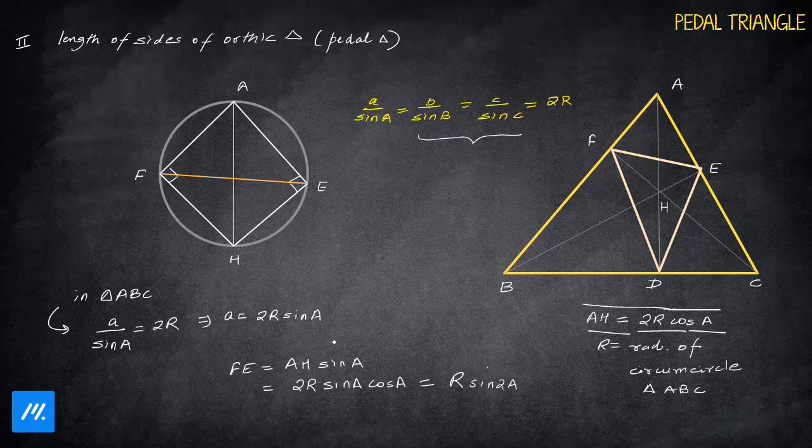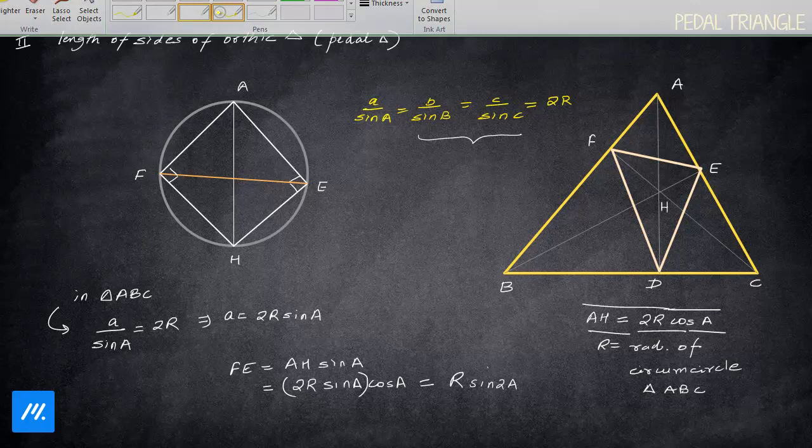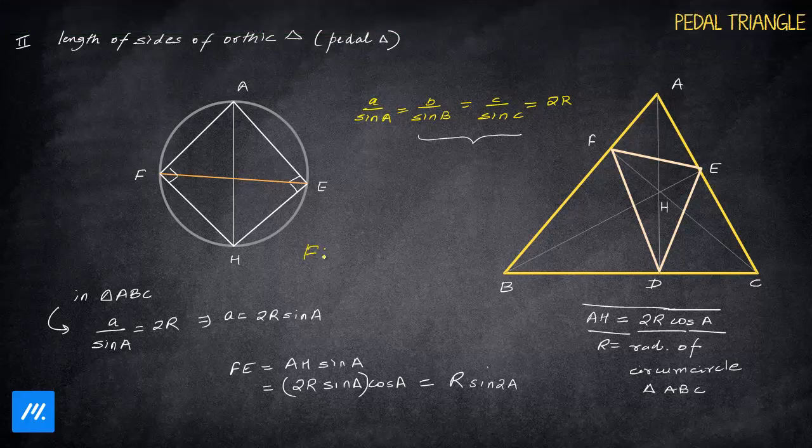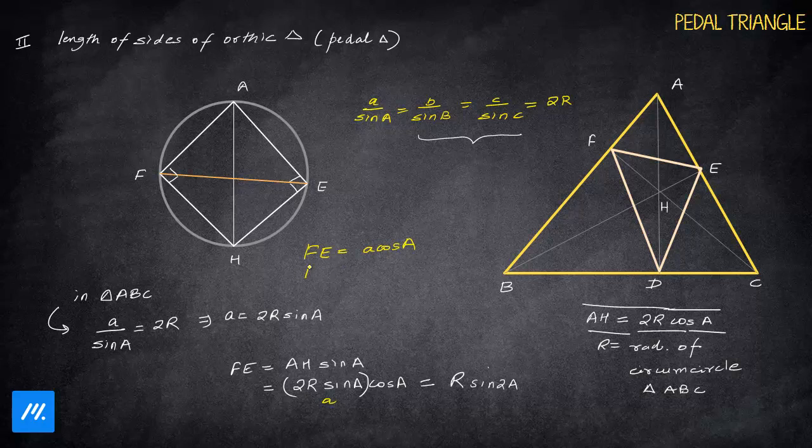So this actually converts into a very simple notation: FE will come out to be a cos A. This is the simplest formula we can make for the pedal triangle. FD will be b cos B, as it's opposite to vertex B. And similarly, if you're asked for ED, it's opposite to vertex C, so it's c cos C. These are the lengths of sides of the pedal triangle that you guys can remember.